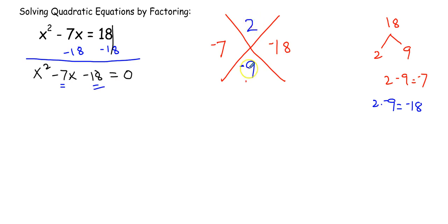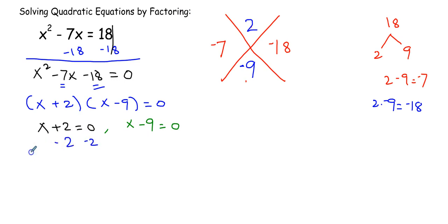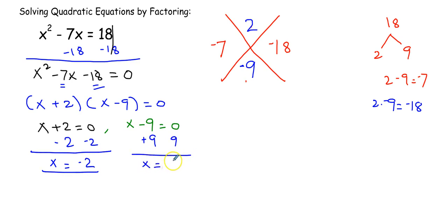Using these numbers, the factors are (x + 2)(x - 9) = 0. Applying the zero product property: x + 2 = 0 gives x = -2 by subtracting 2 from both sides, and x - 9 = 0 gives x = 9 by adding 9 to both sides.